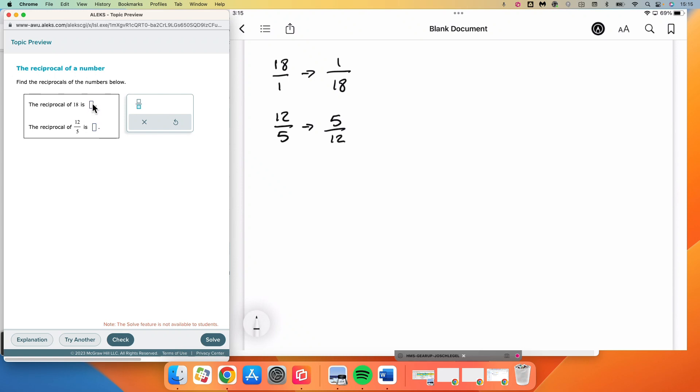So in both cases there, we end up with a reciprocal of the number we started with. In the first one, it's 1 over 18. In the second one, it's 5 over 12.